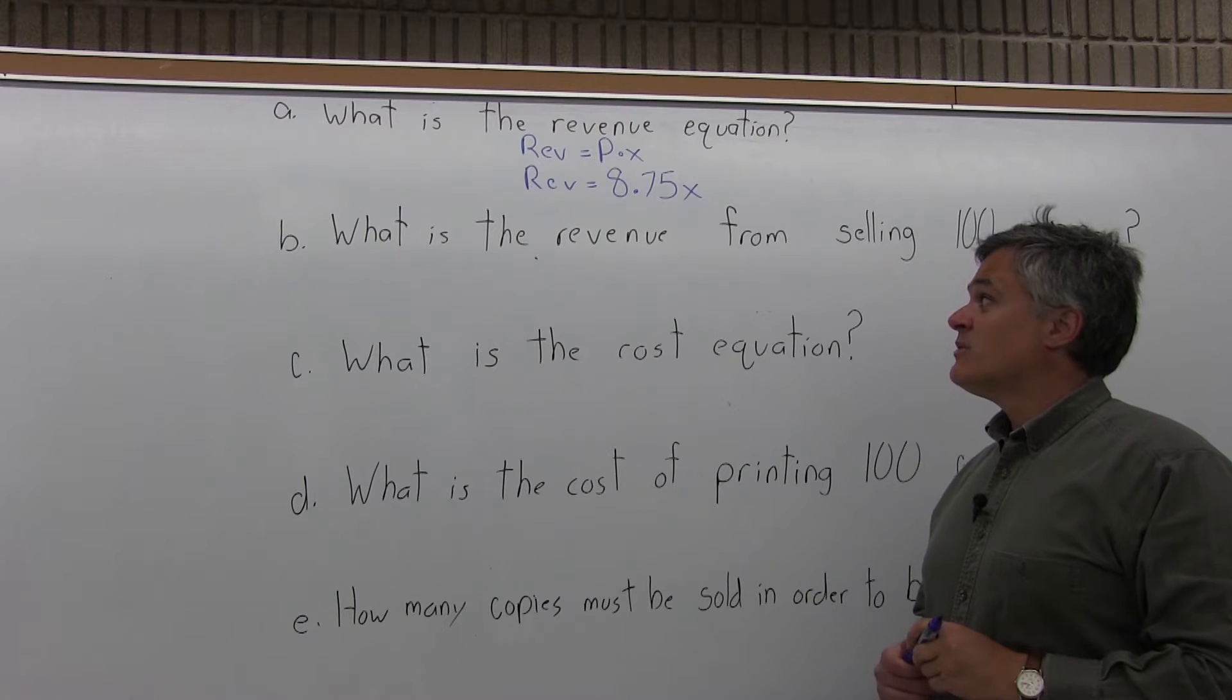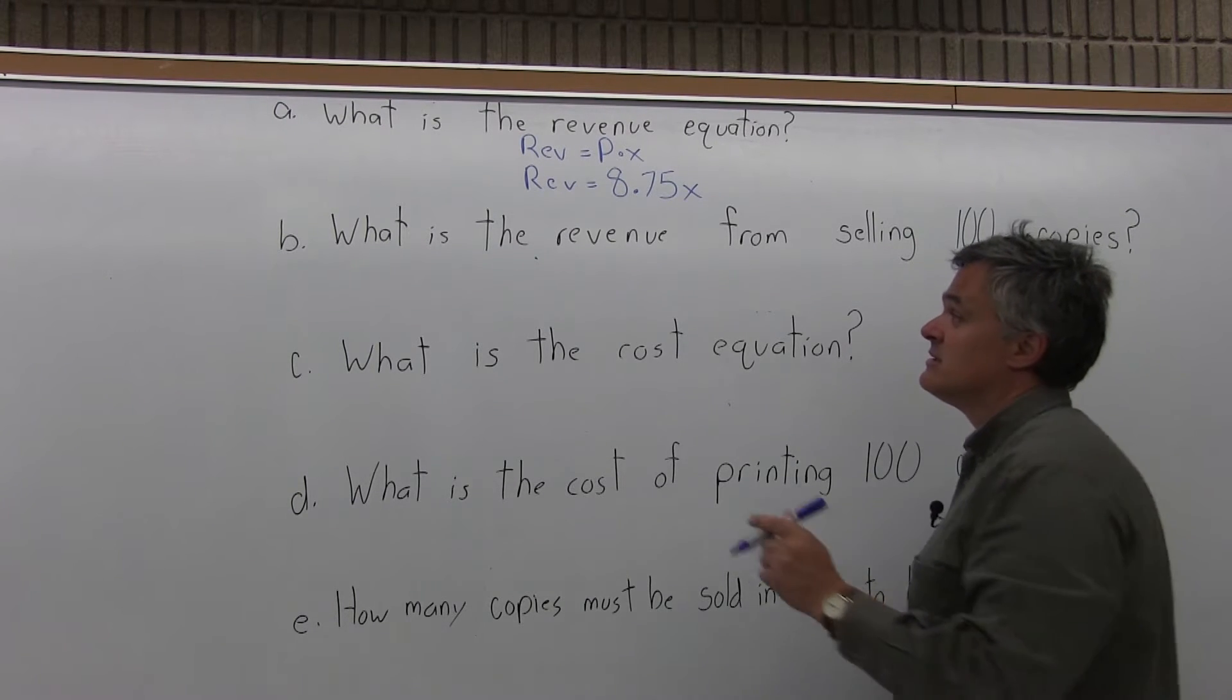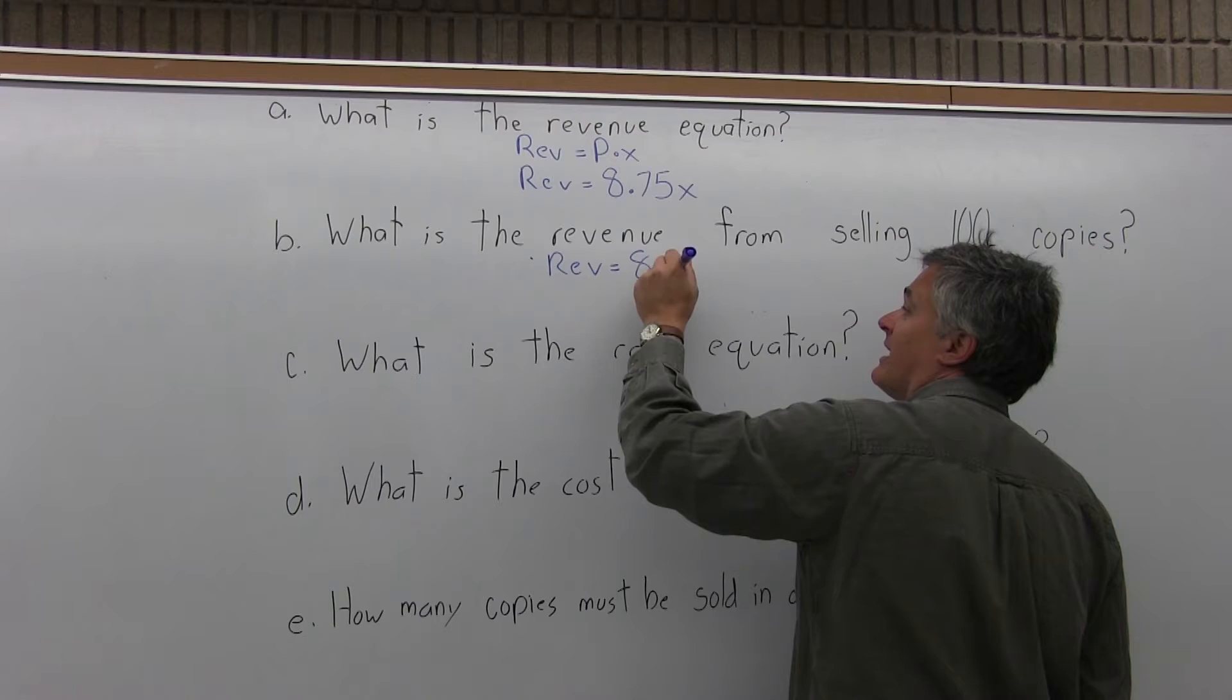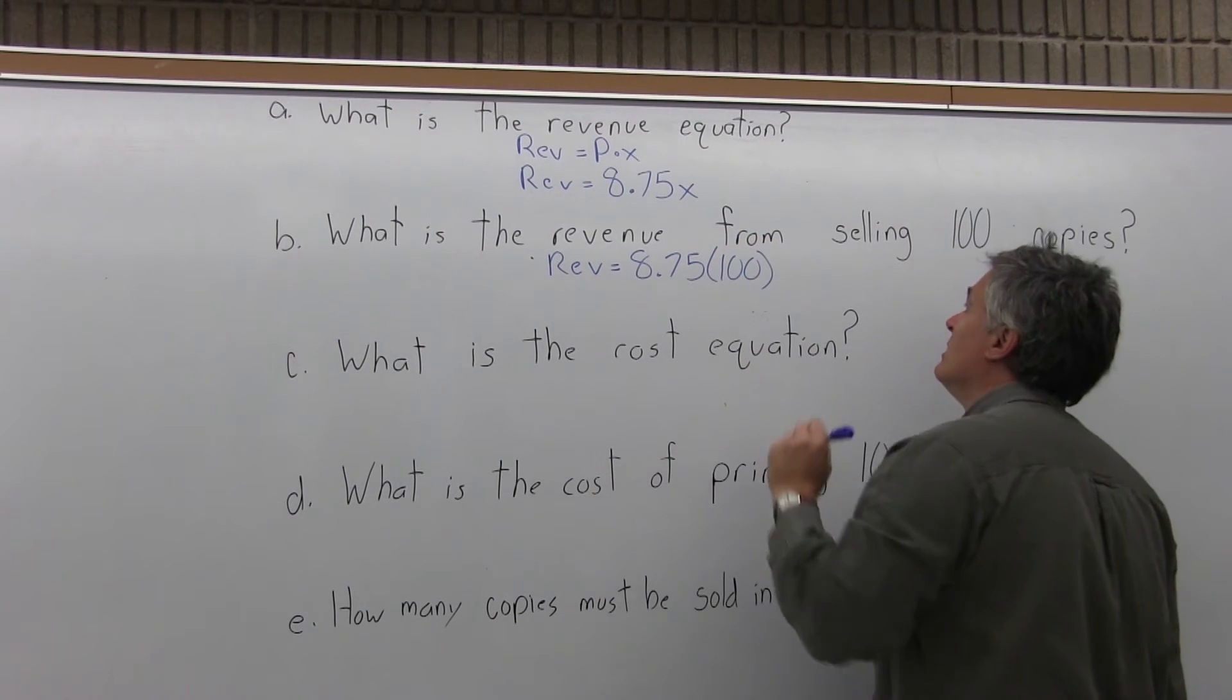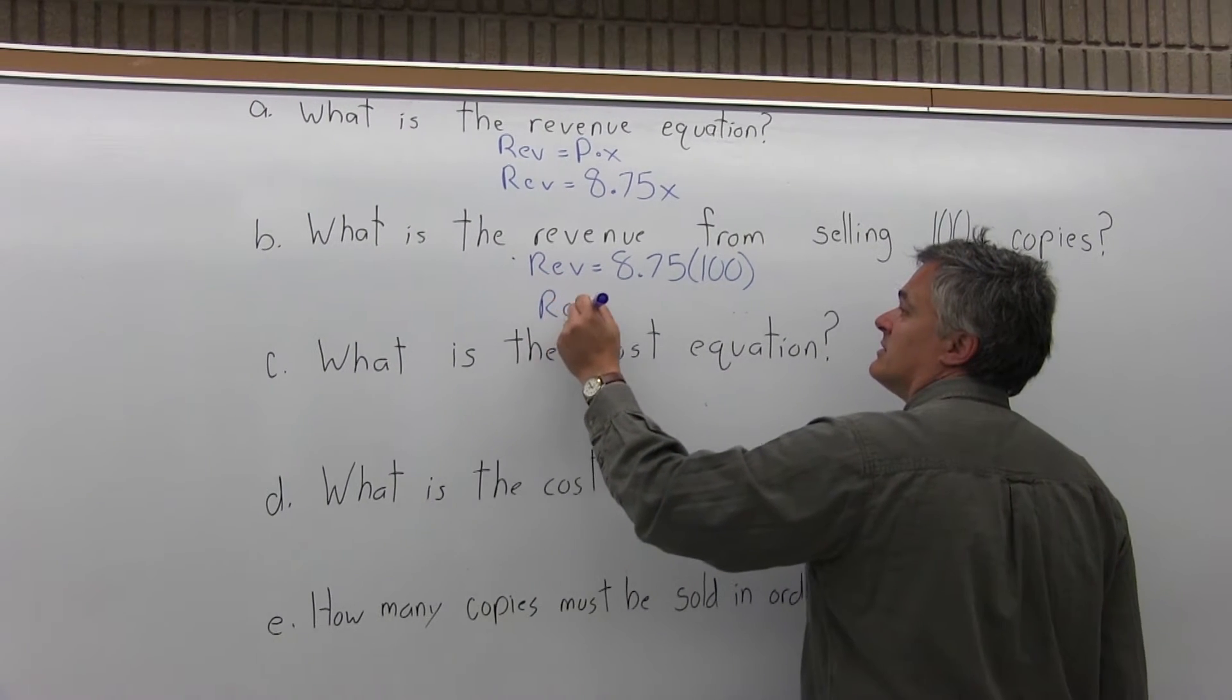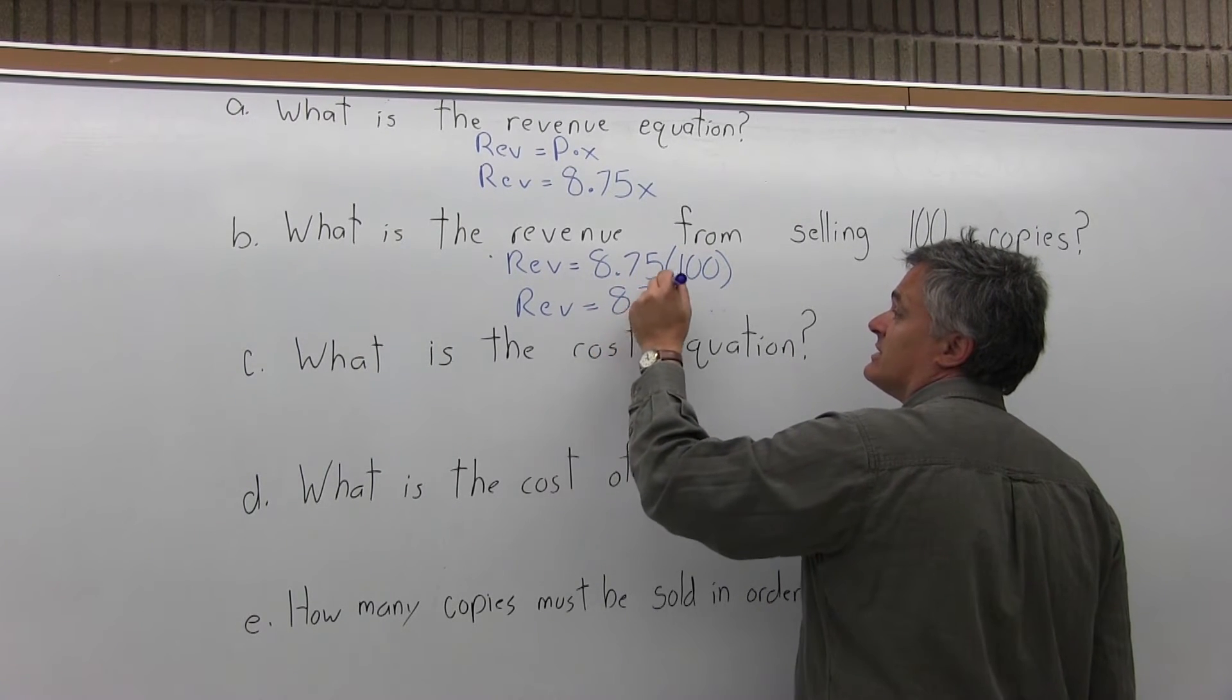Part B, what is the revenue from selling 100 copies? Take the revenue equation from part A, $8.75 times X, and put in 100 for X to represent 100 copies sold. If you sell 100 copies you'll make a revenue of $875.